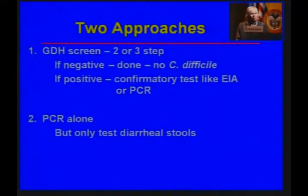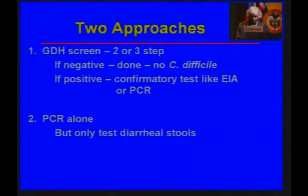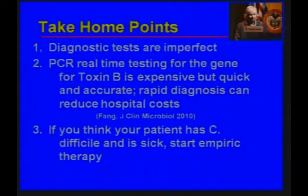This is what our hospital was doing until a few years ago: if the GDH was negative, no further testing; if the GDH was positive, they were doing a confirmatory test like a PCR. But now our hospital is only doing PCR for toxin B, and they are doing the results daily, and I think the results are much more accurate.